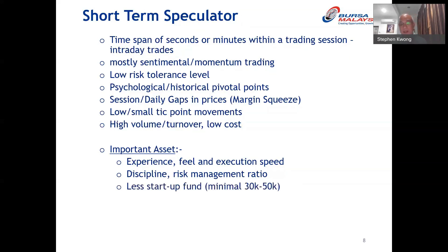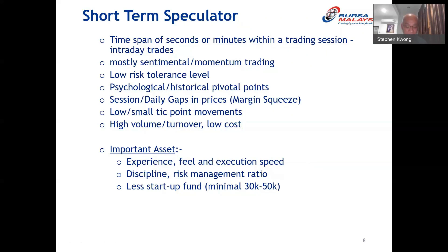In terms of funds required: from my experience, if you want to be a speculator trading Bursa Malaysia products, you will need at least about 30,000 to 50,000 ringgit to start off as a full-time trader. Anything less than that would be difficult and I really wouldn't advise it. That will also depend on the contracts you're trading, but around 30,000 to 50,000 should be about right.